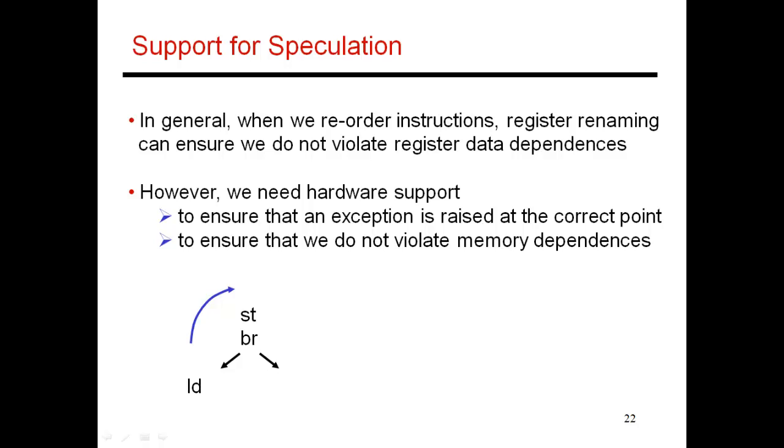So you want to get its work done as early as possible so that when you need the result of the load, the value is already available. So let's say that this load is producing a result in R1, and the address is sitting in R2. And I want to move this instruction ahead. So the new code becomes something like this: load into R1 from this address, do the store, do the branch, then go one of these two ways.